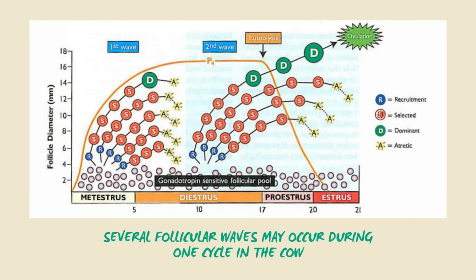This illustration shows the follicular waves that occur during the estrous cycle in the cow. The first follicular wave occurs either as progesterone is rising or during peak progesterone secretion. During metestrus, which is days 2 to 5 in cattle, a group of follicles is recruited. However, these follicles are not exposed to the appropriate endocrine conditions for continued development and undergo atresia within the ovary. Neither complete follicular development nor ovulation can occur under progesterone dominance.